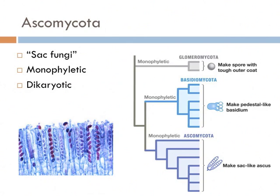You'll notice that the basidiomycetes and the ascomycetes also stem from a common ancestor. This means that this group — both the basidiomycetes and the ascomycetes — are monophyletic together. And since they both have two nuclei, we can infer that the common ancestor of both of these groups must have been dicaryotic.